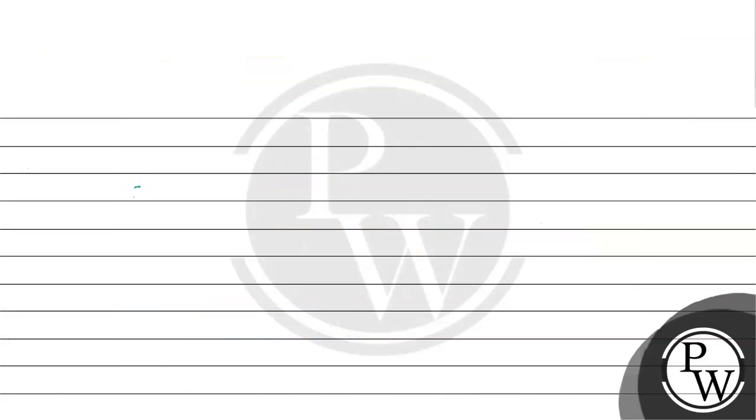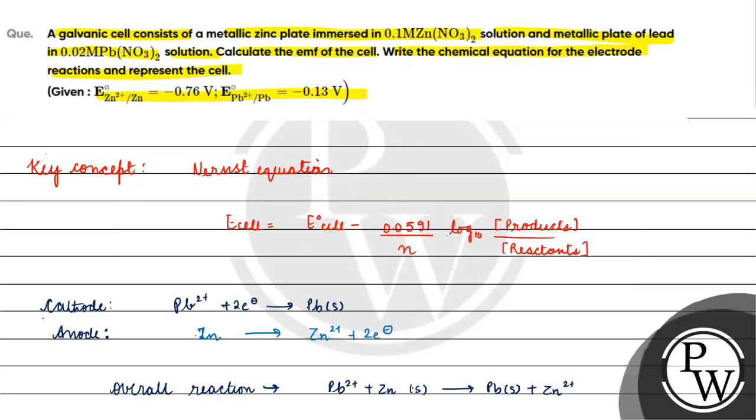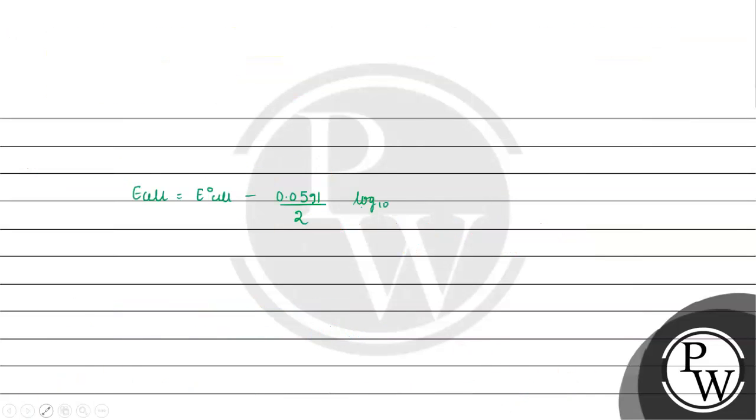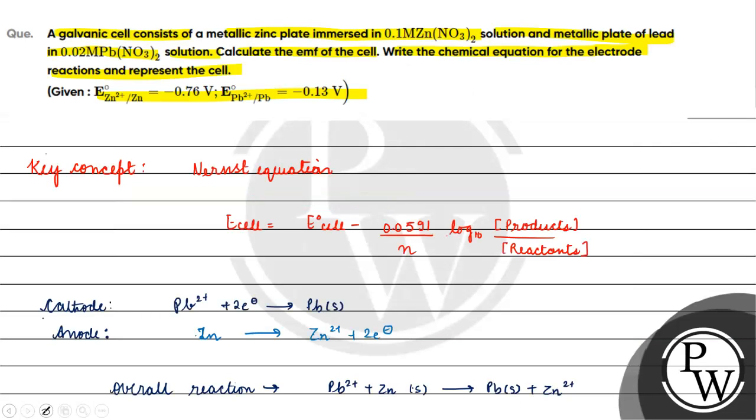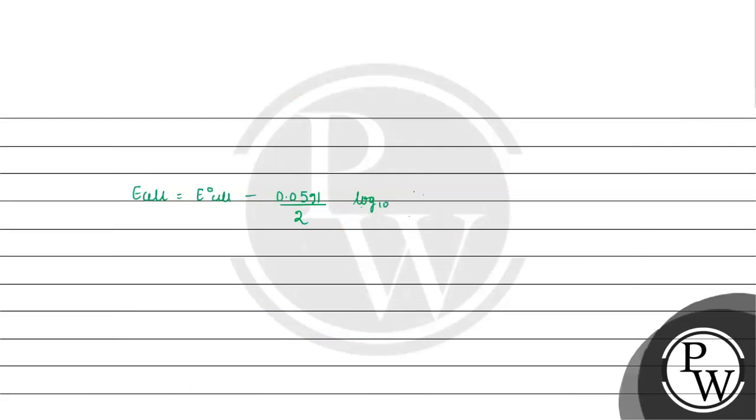Now if we write the Nernst equation, E cell equals E naught cell minus 0.0591 by 2, where number of electrons is 2, log with the base 10 concentration of the products. We'll take concentration of Zn2+ because this is solid so its active mass is 1. The concentration of Zn2+ is 0.1 molar.